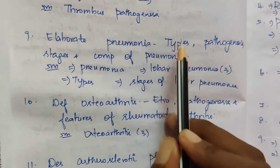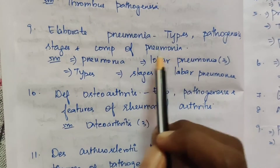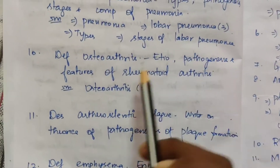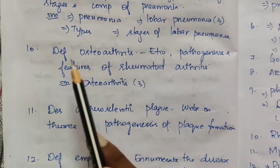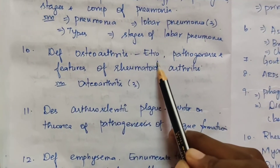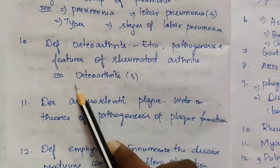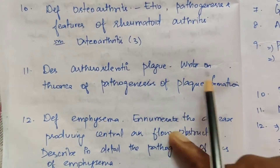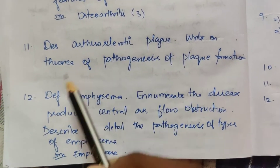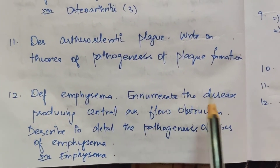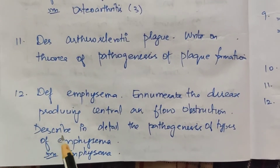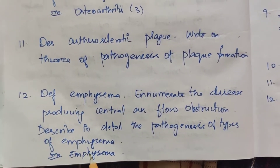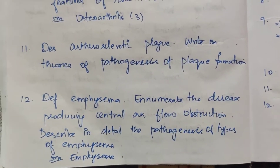The ninth topic: elaborate on pneumonia — types, pathogenesis, stages, and complications. For 5 marks: pneumonia types, lobar pneumonia — appeared 3 times, and stages of lobar pneumonia. The tenth topic: define osteoarthritis, etiology, pathogenesis, and features of rheumatoid arthritis. For 5 marks: osteoarthritis — appeared 3 times. The eleventh topic: define atherosclerotic plaque and write on theories of pathogenesis of plaque formation. The twelfth topic: define emphysema, enumerate diseases producing central airflow obstruction, and describe the pathogenesis of types of emphysema. For 5 marks: emphysema. These complete the 12 fifteen-mark topics in pathology.